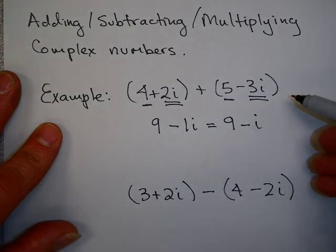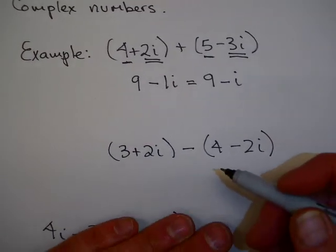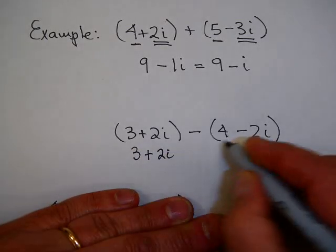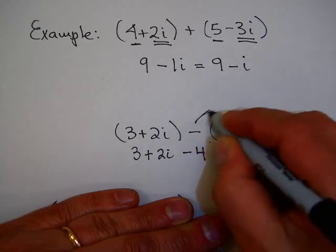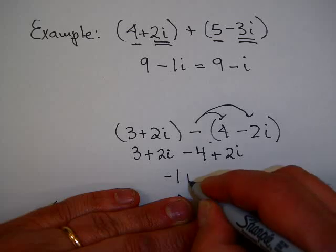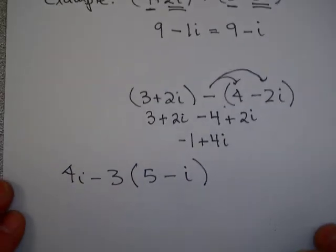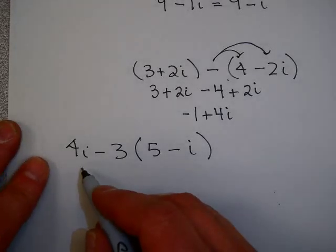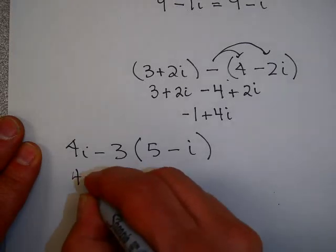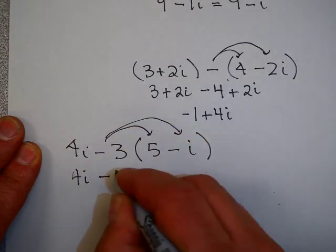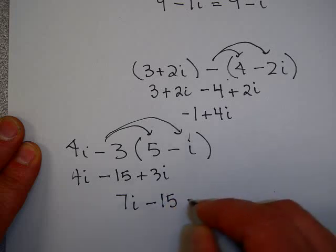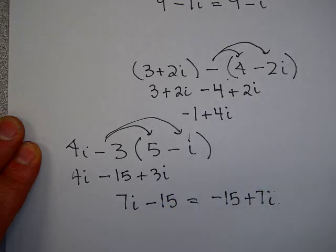As another example, look at 3 minus 2i minus (4 minus 2i). My first step is to distribute the minus sign to get minus 4 plus 2i, so 3 minus 4 is negative 1, and 2i plus 2i is 4i, giving negative 1 plus 4i. Here's a problem to try yourself — pause the video. Then: distributing minus 3 gives minus 15 plus 3i, and 4i plus 3i is 7i, so the answer is negative 15 plus 7i.